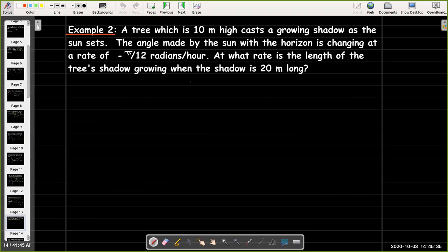Next example, we have a tree. It's 10 meters high. And as the sun sets, it's casting a growing shadow. And we're saying that the sun is setting at a rate of negative π over 12 radians per hour. That means the angle of the sun with the horizon is decreasing at this rate.